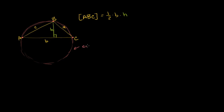This is the circumcircle for this triangle. Now let's think about the center of that circumcircle, sometimes referred to as the circumcenter. That is the circumcenter of the circle. Let's draw a diameter from vertex B through that circumcenter, and then keep going over here. Let's call this point over there D.